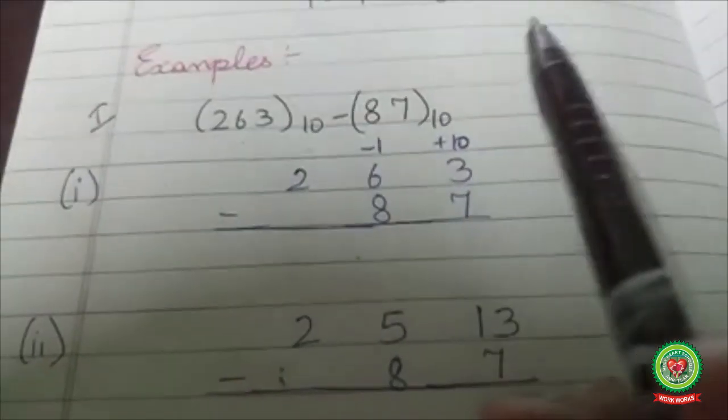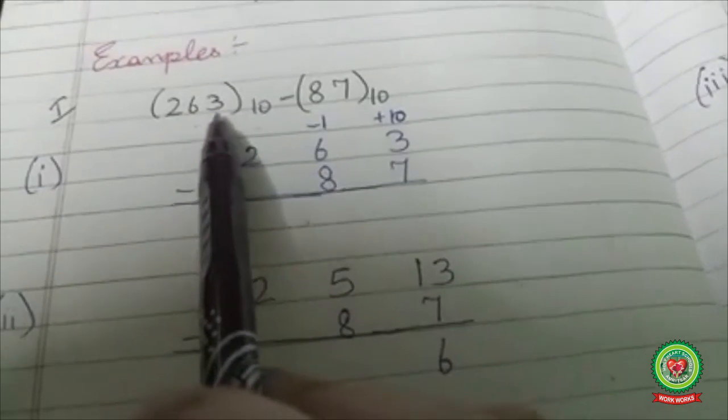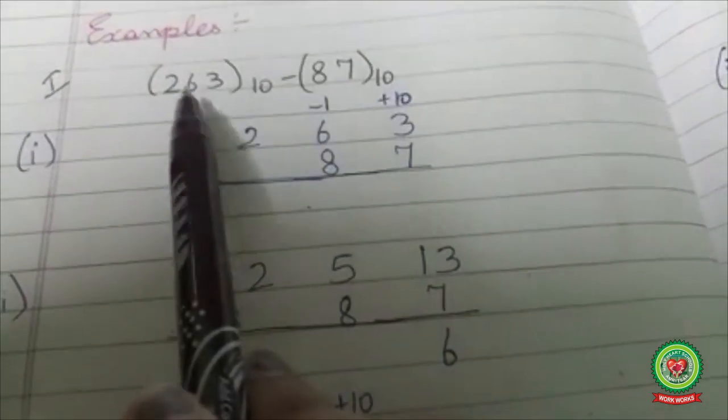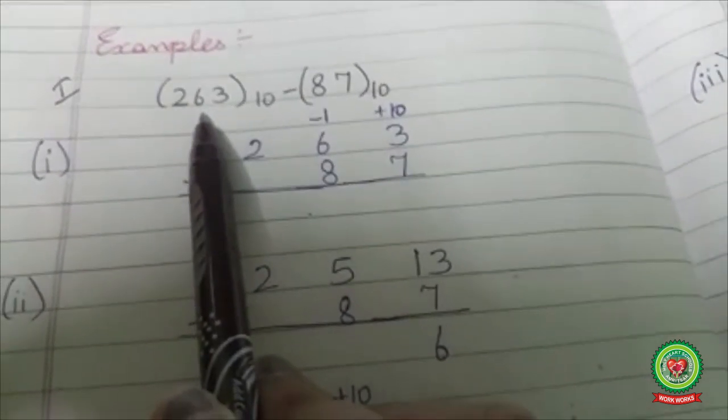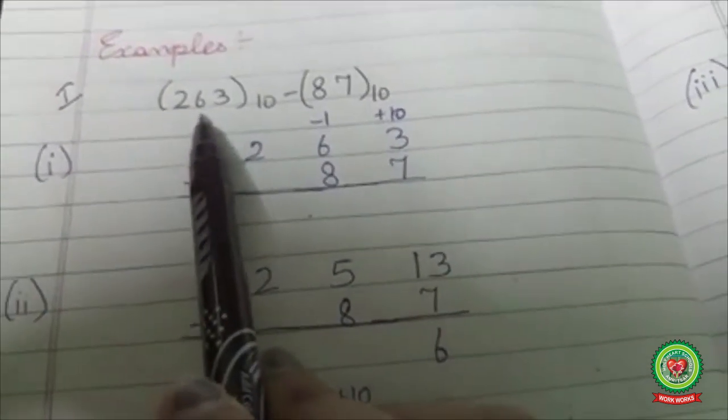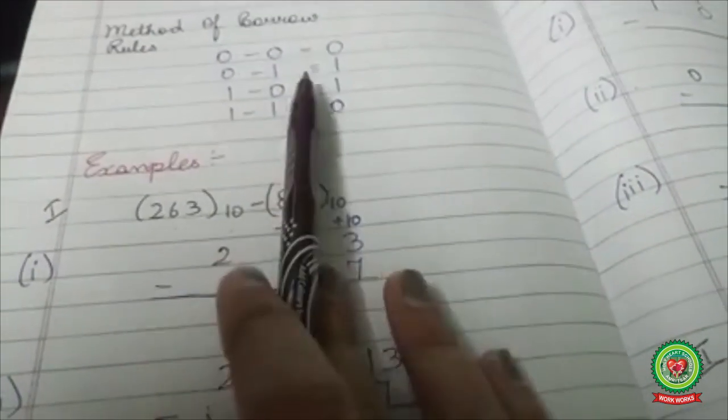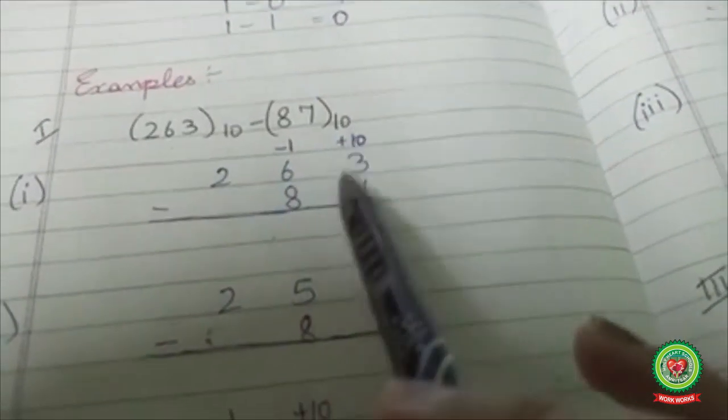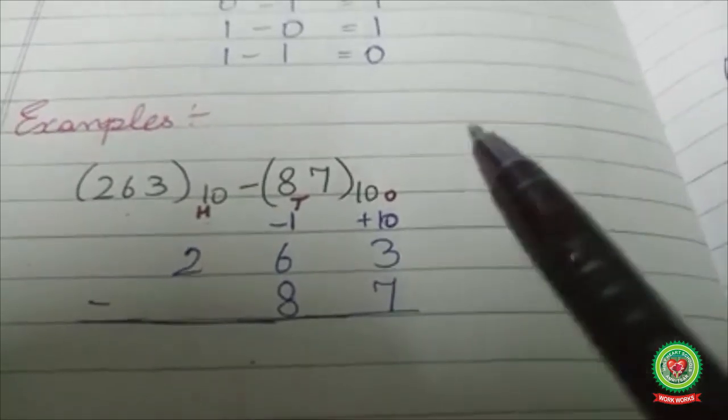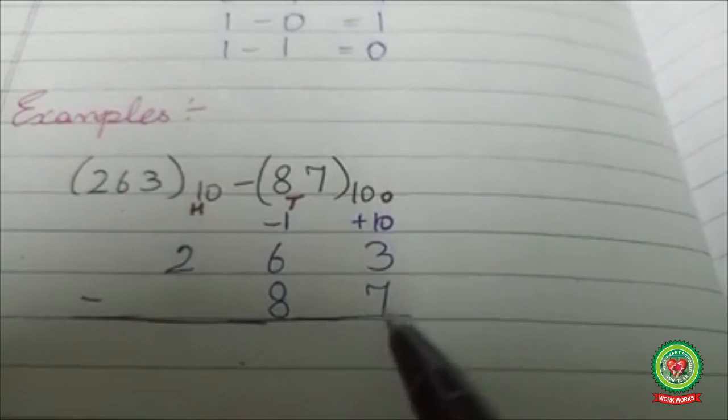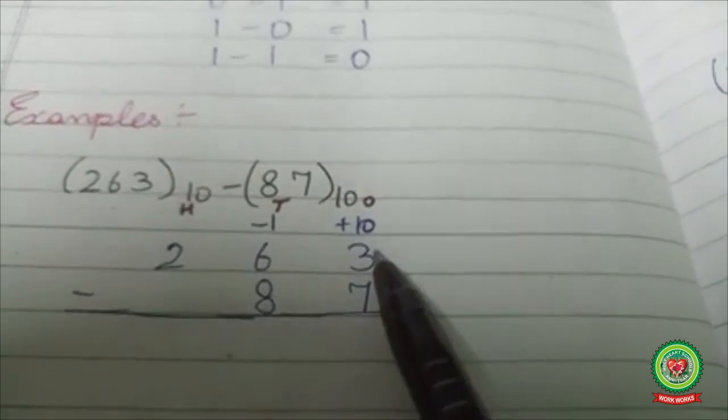Let's do an example. Here I'm going to subtract 87 from 263. First I'll perform this decimal subtraction with the method of borrow. Students, as you know, you cannot subtract a larger number from a smaller number.